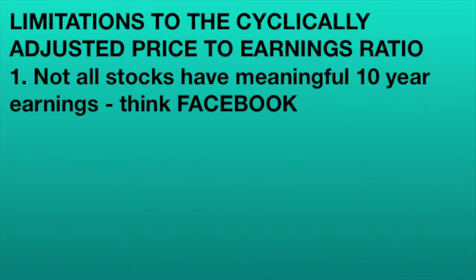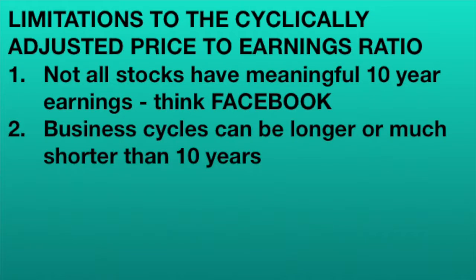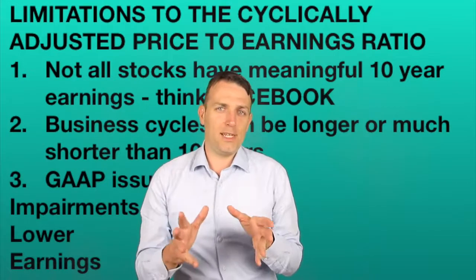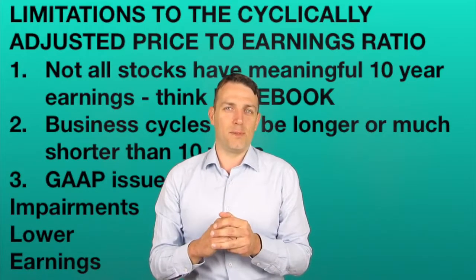The first limitation is that many stocks don't have meaningful 10-year average earnings. Think of Facebook — it wasn't even traded until 2014, so you can't really look at CAPE ratios for Facebook. The second limitation is that the length of a business cycle can be longer than 10 years or much shorter, so the CAPE can be skewed by two or three recessions in a decade — something largely possible in the next 10 years.